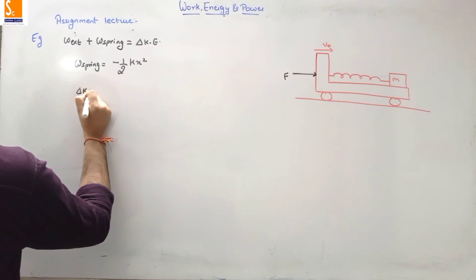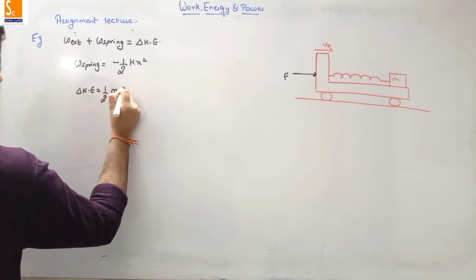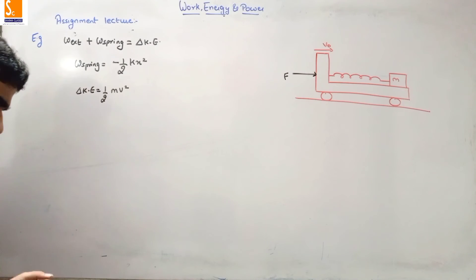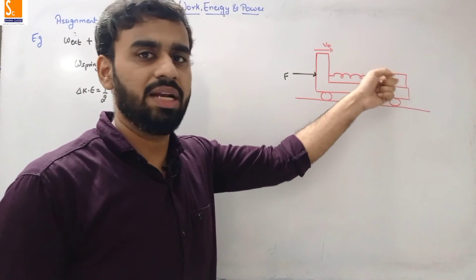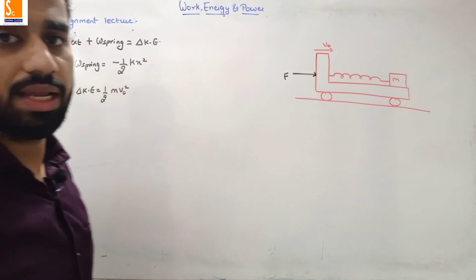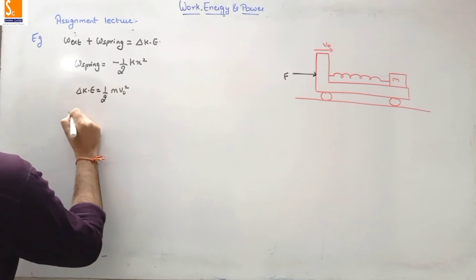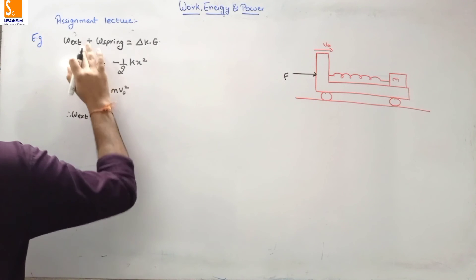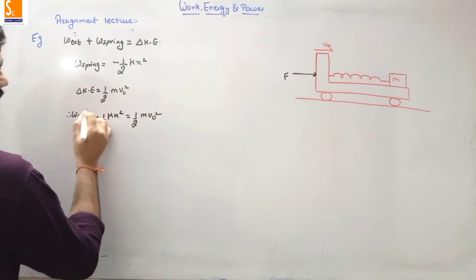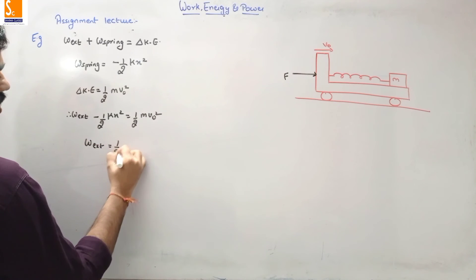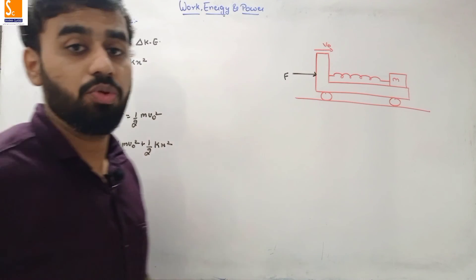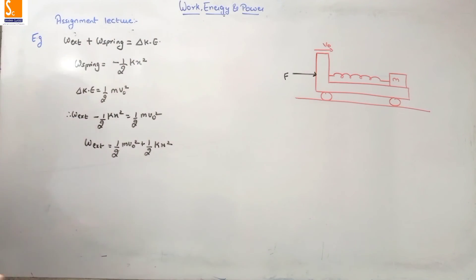Therefore: work done by external agent − ½KX² = ½MV₀², so work done by external agent = ½MV₀² + ½KX². We still need to find X. To find X, we shift to the reference frame of the wedge (observer on the plank moving at V₀). In this frame, the block's initial velocity is V₀ and final velocity is 0 (at maximum compression). So change in KE in this frame = 0 − ½MV₀² = −½MV₀².